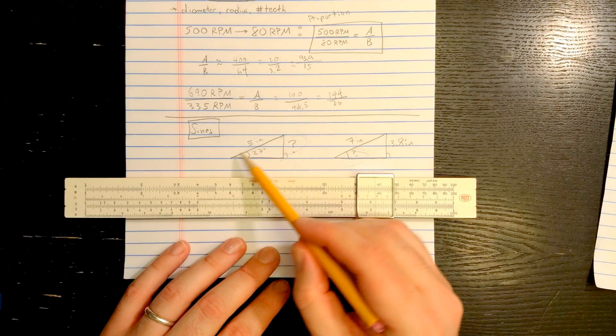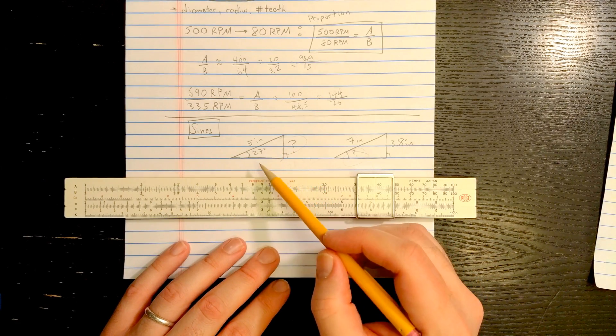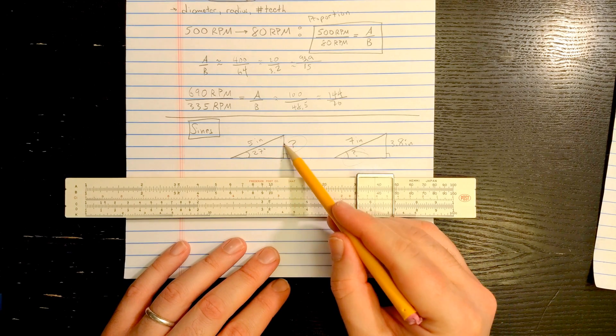So here in this problem I have a 5 inch bar, which I think is what he's using in his video. You've got a 27 degree angle, how long should you make this side?